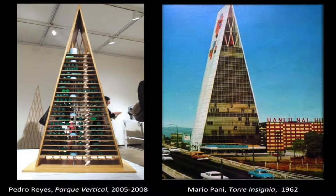Today I will focus on Reyes' project Parque Vertical, for which he intervenes in the ruins of Tlatelolco, a defunct housing project in Mexico City designed and built by modernist architect Mario Pani in the 1960s. On the left is a photograph of one of Reyes' original components of this multi-part project, for which he transforms the design of Pani's most distinctive tower at the complex, the Torre Insignia. The monumental structures built here at Tlatelolco by Pani still stand as vestiges of a bold, ostentatious, and miserably failed modernist project.